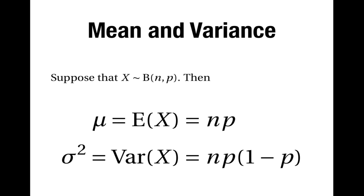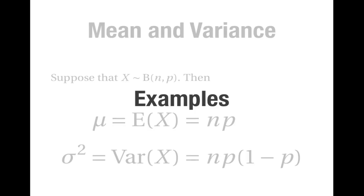So you can see that it's very simple to work out the mean and variance of a binomially distributed random variable using these two formulae. Let's look at some examples.